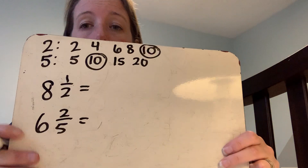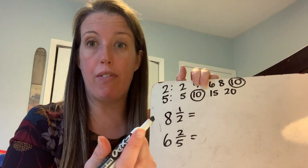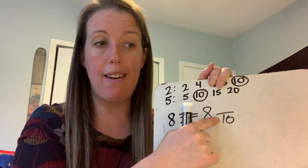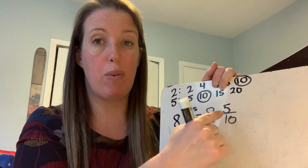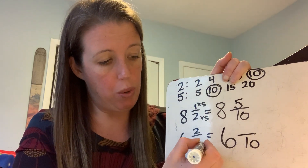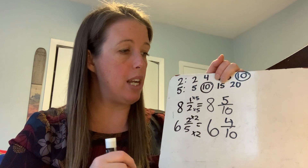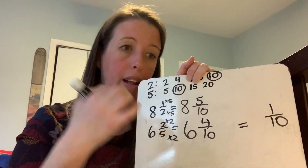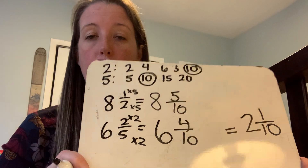Hopefully you found your multiples of two and your multiples of five, and you saw that they have a common multiple of ten. I'm going to take my original fractions and make equivalent fractions using tenths. Eight and a half is equivalent to eight and how many tenths? To get my denominator of two to become ten, I multiply by five — so one times five is five. Half is equivalent to five-tenths. Next, two-fifths: I keep my whole number but turn my fraction into tenths. Five times two gives me tenths, so two times two gives me four-tenths. I have eight and five-tenths minus six and four-tenths. Five-tenths minus four-tenths equals one-tenth. Note: the denominator does not get subtracted — it stays the same unit, tenths. Eight wholes minus six wholes is two wholes. Final answer: two and one-tenth.